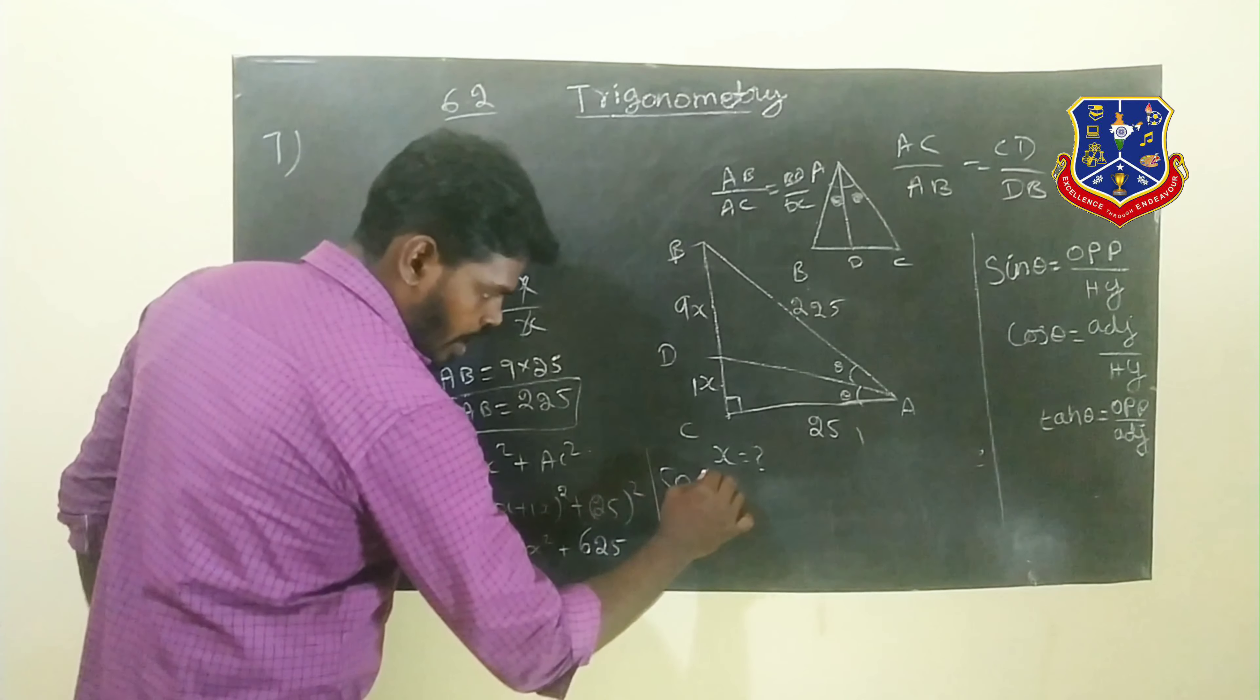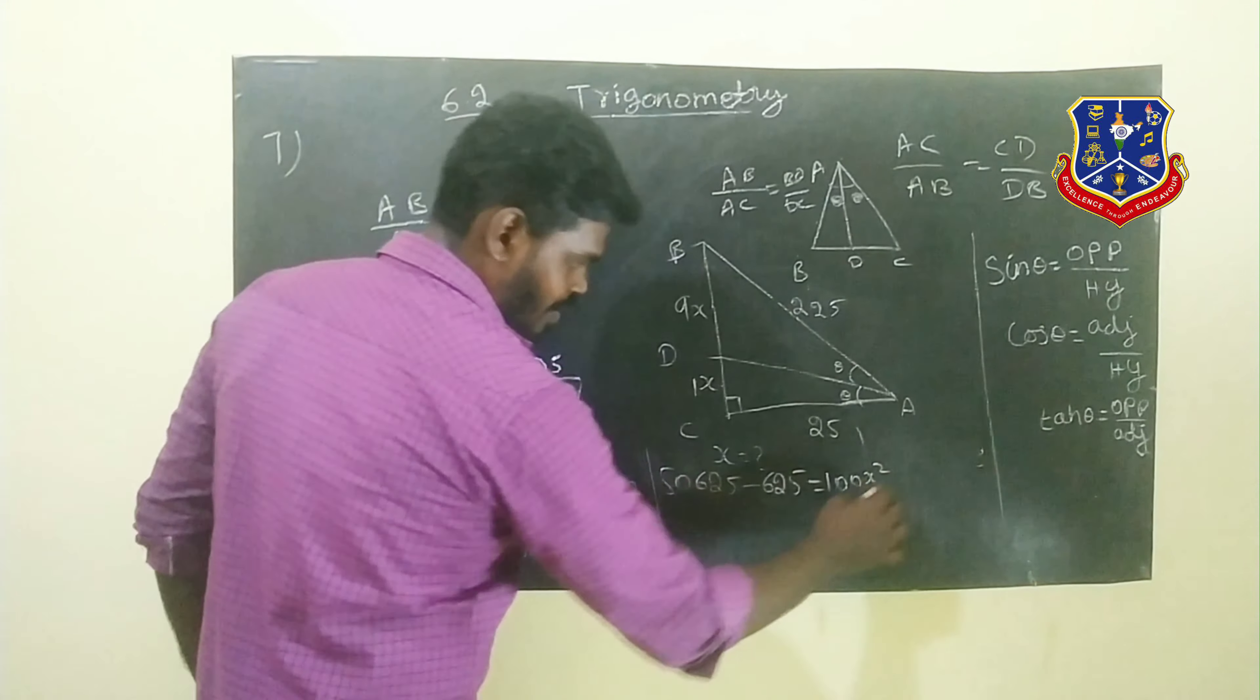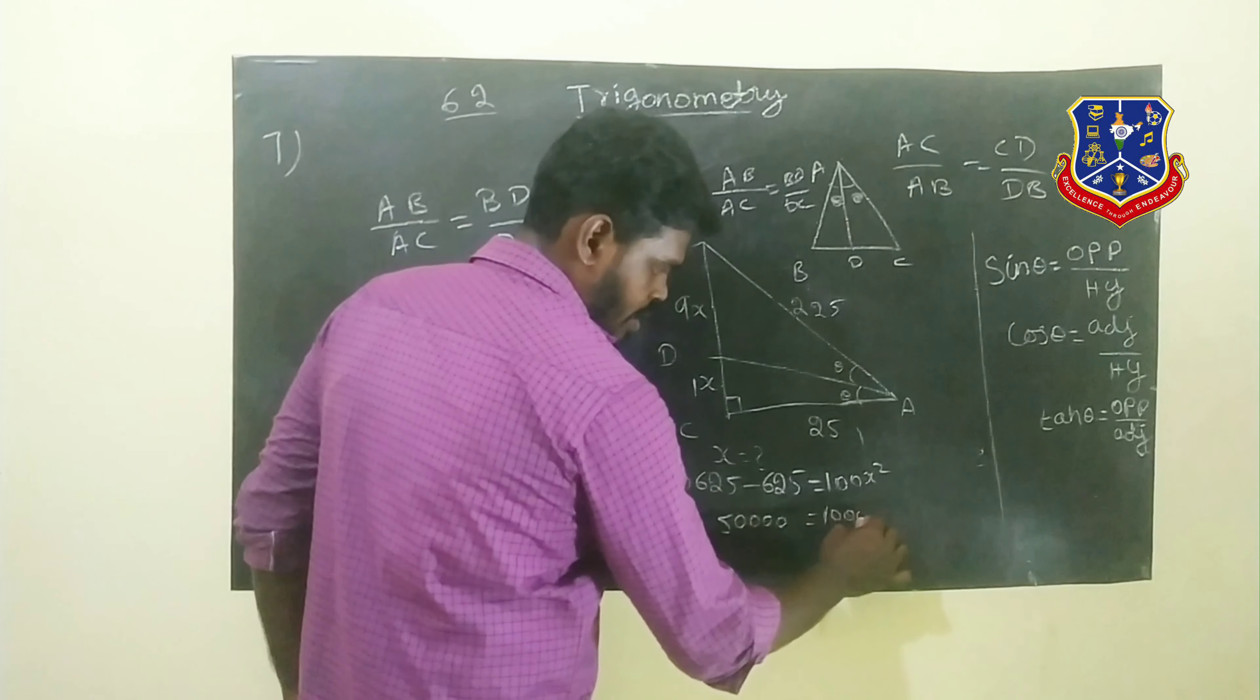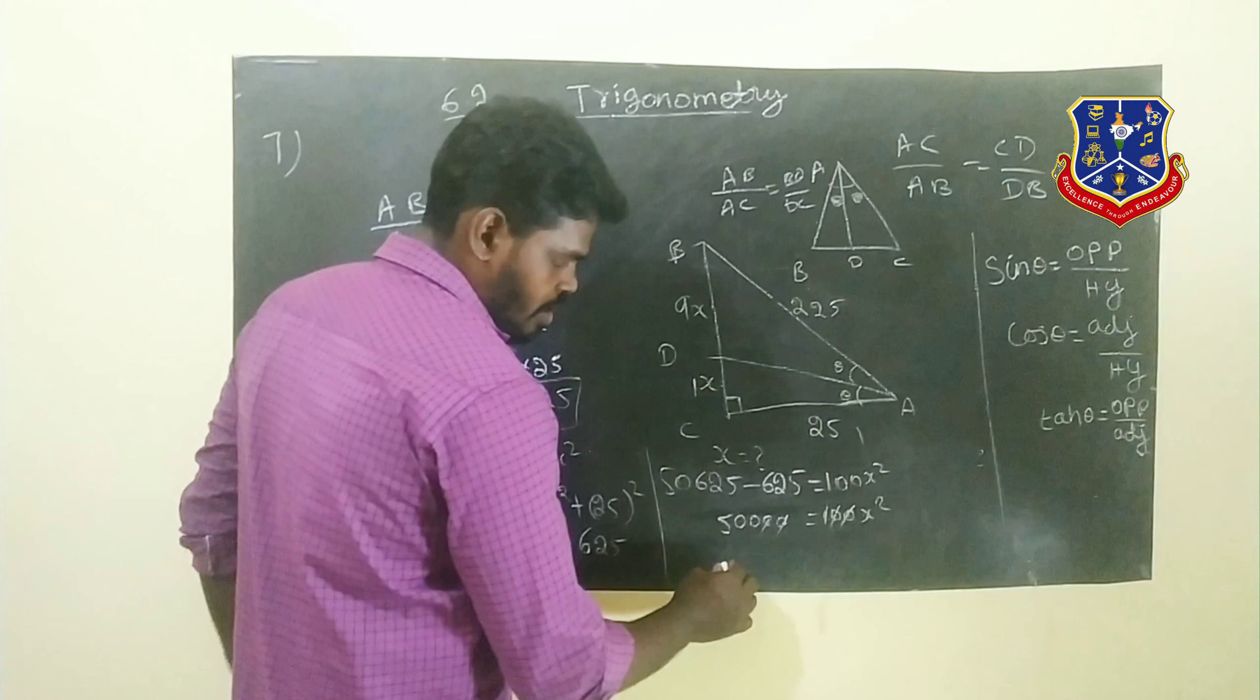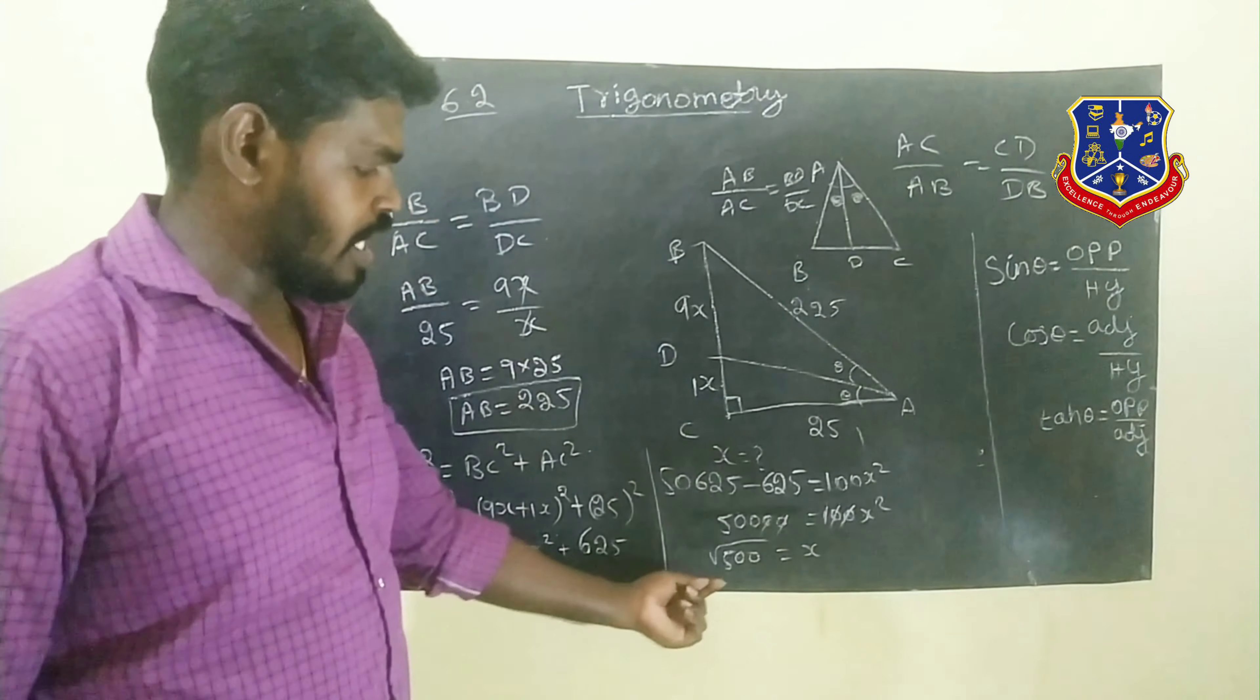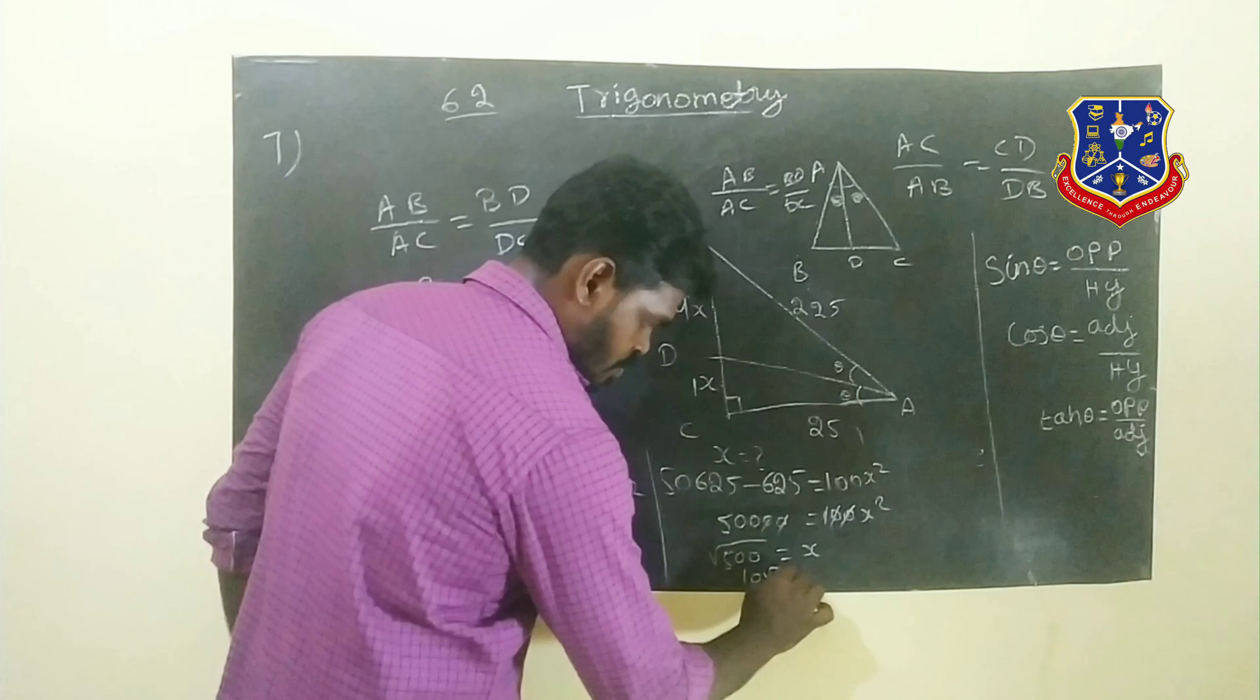225 squared is 50,625. Now 625 minus 625 cancels out, so 50,000 equals 100x squared. Therefore x squared equals 500, so x equals root 500. This simplifies to 10 root 5 because root 100 is 10.